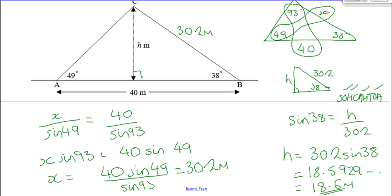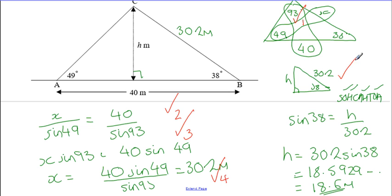Marks for question ten: one for identifying the 93°, one for knowing to use the sine rule, one for substituting correctly into the sine rule, one for rearranging to get 30.2 m. The fifth mark is for using the right-angled triangle strategy, the sixth for using SOHCAHTOA correctly, and the seventh for your final answer. If you use the sine rule again in the second triangle, the sixth mark is for substituting in and the seventh is still for your answer.